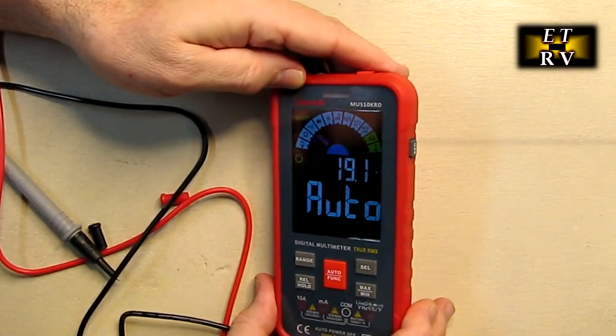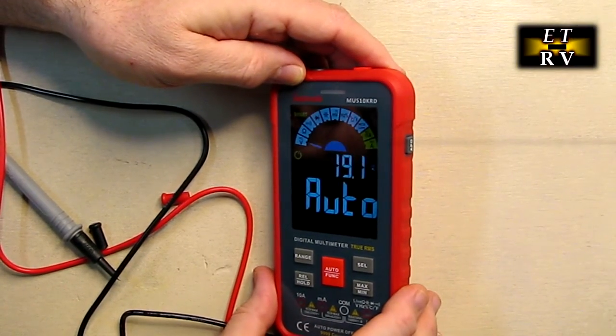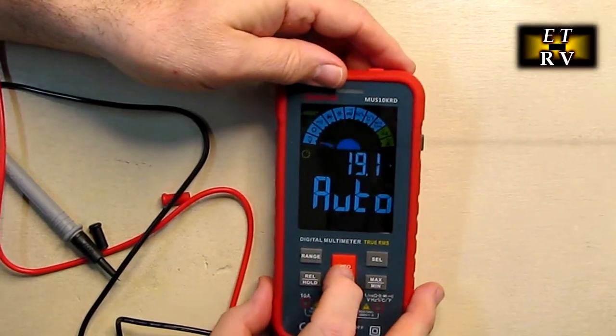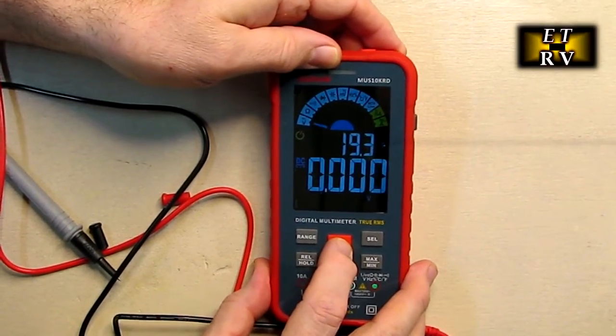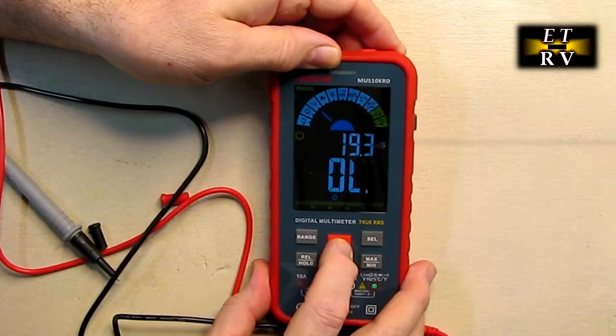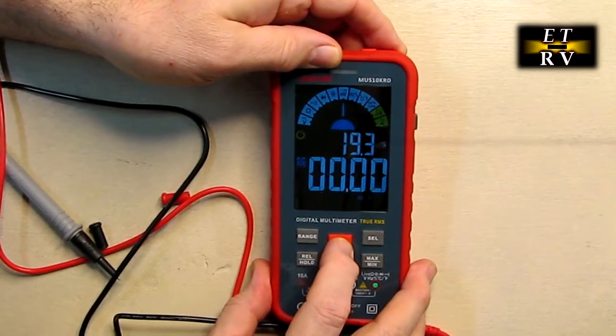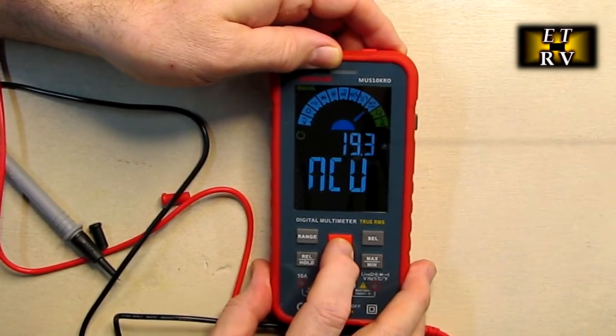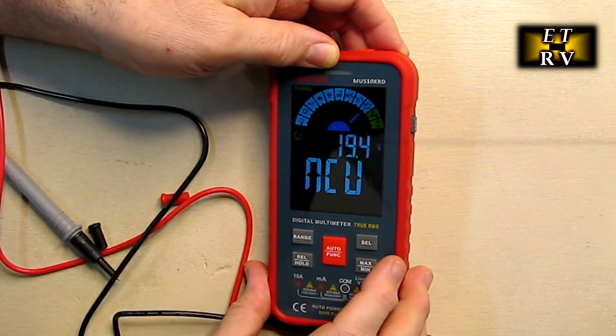Now one of the first things I'm going to show is there is an NCV live function. And if you hit this button, you go out of automatic mode and you can step through all the different modes. And you notice there is NCV live right there.